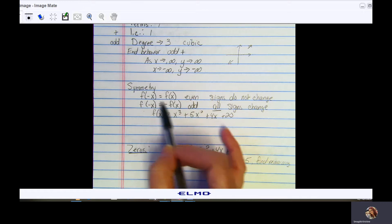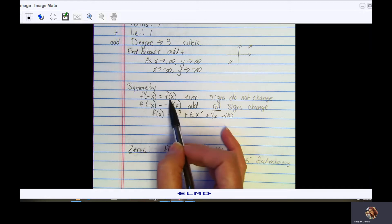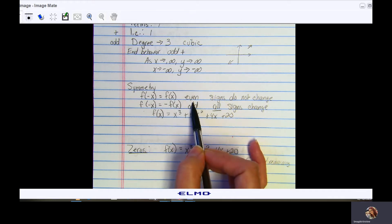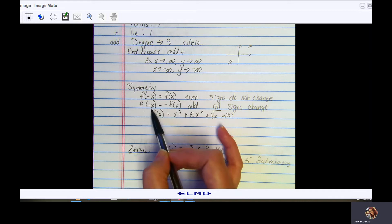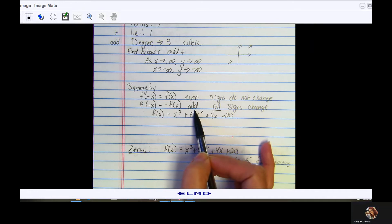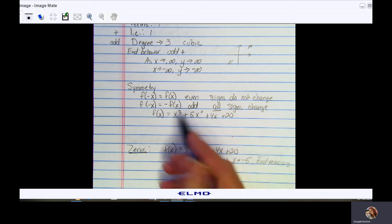We have this little test that we can perform. If you just substitute negative x into your original function, if what comes out is exactly the same as your original function, meaning the signs do not change, it is even. If you input negative x for all of your x's and all of your signs change on your original function, it's odd. If maybe you have some signs change and some signs do not, it is neither.